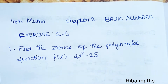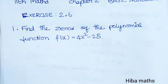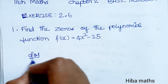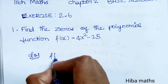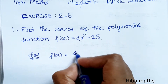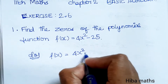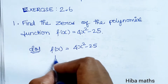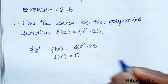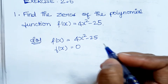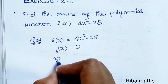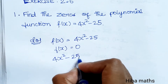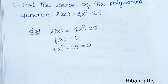To find the zeros of f(x), we need to find where f(x) equals 0. In the solution, given f(x), f of x is equal to 4x squared minus 25. To find the zeros, set f(x) equal to 0 and write it out: 4x squared minus 25 equal to 0.